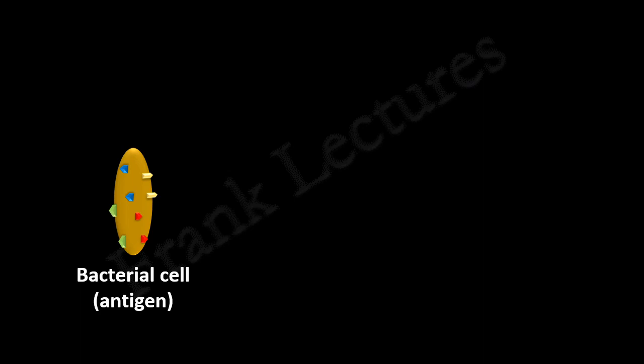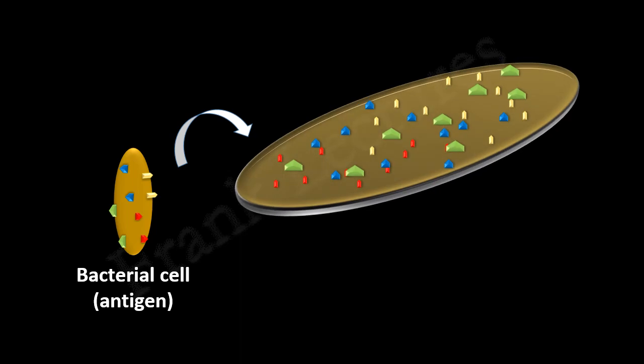Suppose this is an antigen which invaded the body — let's say there is some bacterial infection. We know that microbial surfaces have many molecules that vary in their chemical nature. They may be proteins, carbohydrates, or lipids. These microbial surface molecules or their portions are recognized by B-cell receptors. These are the epitopes to which B-cell receptors will bind.